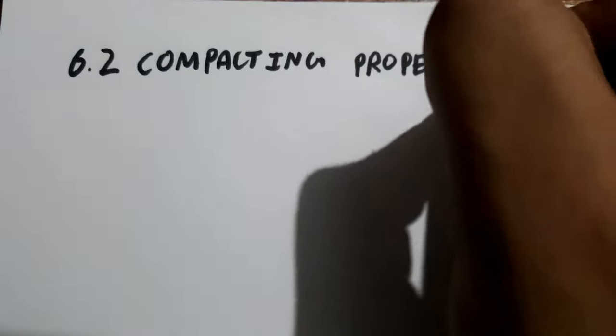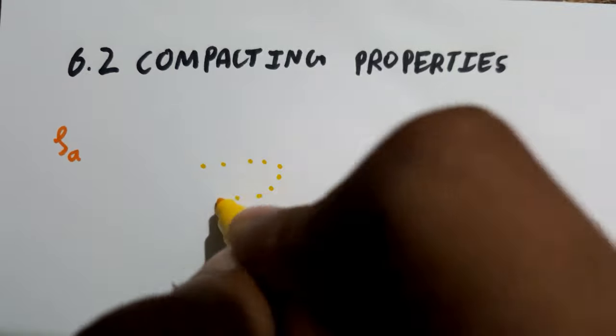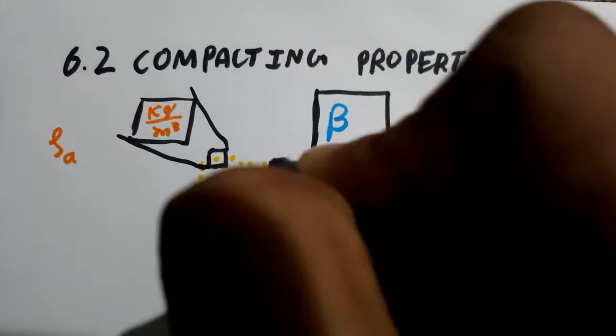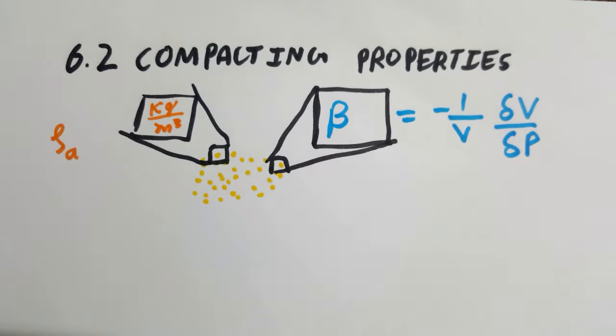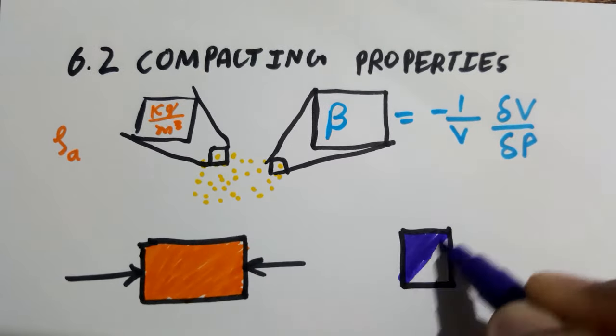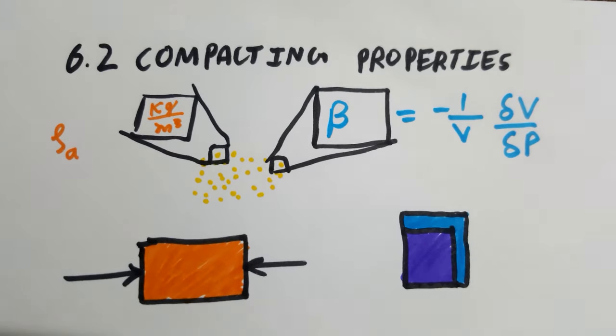Second comes compacting properties like apparent density, defined as the mass per unit volume of loose and packed powder; compressibility, defined as the ability of the powder to undergo compression under applied pressure; green strength, defined as the mechanical strength of a green compact; and green spring, defined as the expansion of compact under ejection.